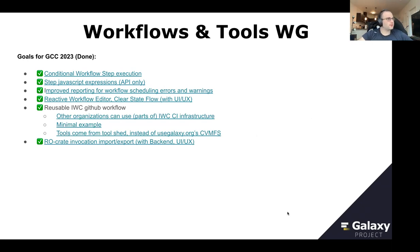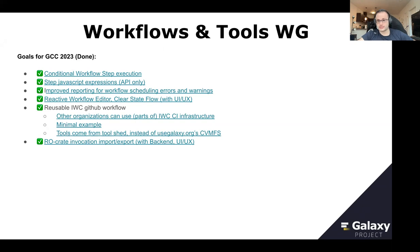We have a few big things implemented over the last term. We have conditional workflow step execution — you are able to have conditional inputs where the workflow will run if input files are not required but can alter the workflow run if they are included — as well as step JavaScript expressions for the API, which will allow you to manually write in Boolean inputs. We have improved work reporting for workflow scheduling errors and warnings, now much more granular where you can see not only that the workflow failed, but when it failed, why it failed, what step it's failing on, and what the specific issues are, with error codes that are much more visible to the user.